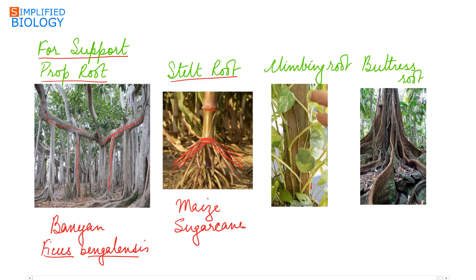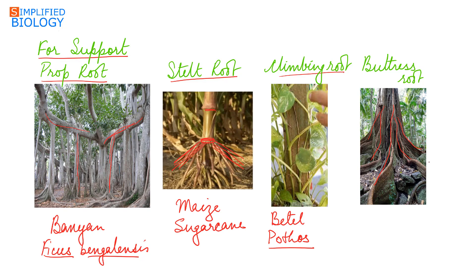Next are climbing roots. Climbing roots develop from the nodes and help the plant to climb. Example: Piper betle, the betel plant, and Pothos, the money plant. Next are buttress roots. These are huge roots developing from the base of the stem, growing in all directions, providing support to the plants or trees. They appear to be part of the stem but are actually roots. Example: Peepal.